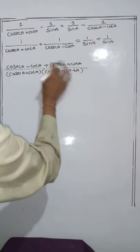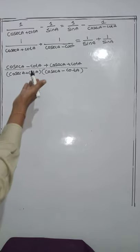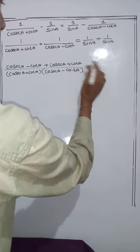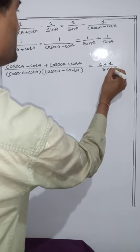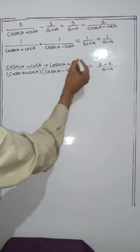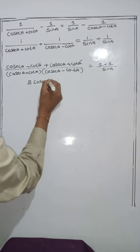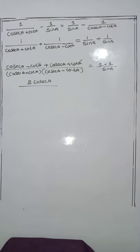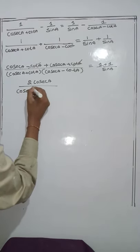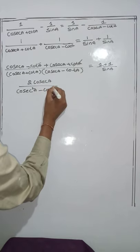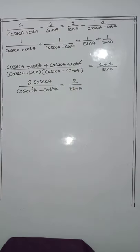If it were minus, the terms would change sign and we'd need brackets, but since it is plus, we write directly. The fractions are like fractions, so 1 plus 1 by sin A. Now, minus cot A plus cot A cancels. Cosec A plus cosec A equals 2 cosec A. The denominator is in the form of A plus B times A minus B, which equals A squared minus B squared, giving 2 cosec A over cosec squared A minus cot squared A, which equals 2 by sin A.